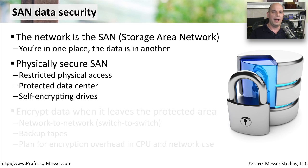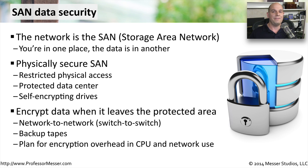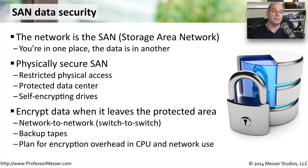We also might want to consider how this information is stored if it leaves this protected area. When you're transferring data outside of the data center — maybe to somewhere else in the organization across a wide area network or to a third party — you may want to encrypt that data as it goes across the network. One additional concern is backup tapes, which are very often stored at a third-party facility. Backup tapes can go missing as they are transferred between locations, so you want to be sure that if a tape is missing, nobody would be able to gain any information from it because you've encrypted everything written to that tape.